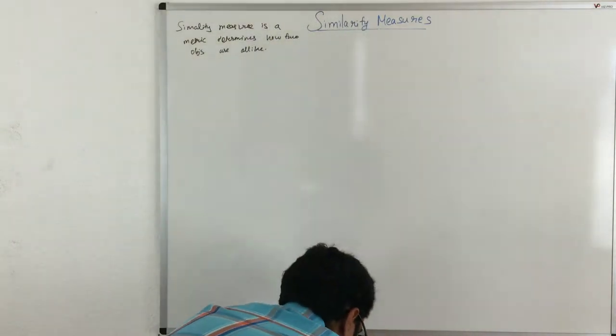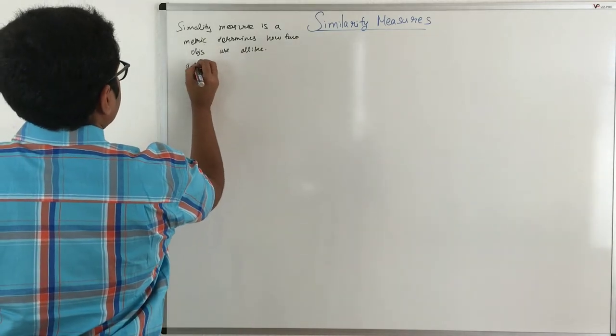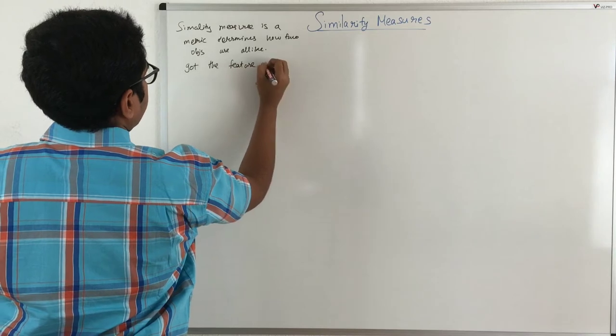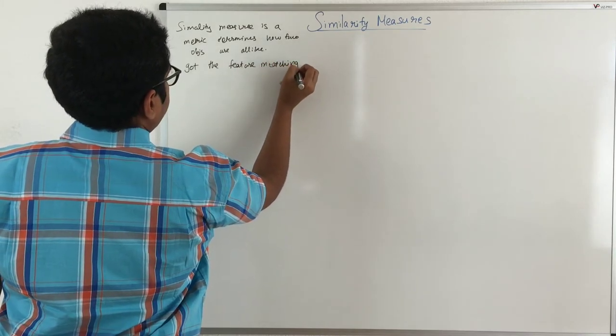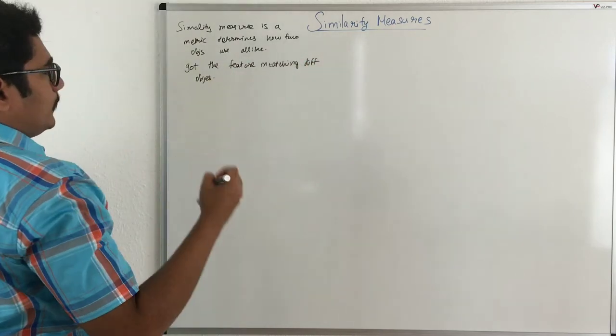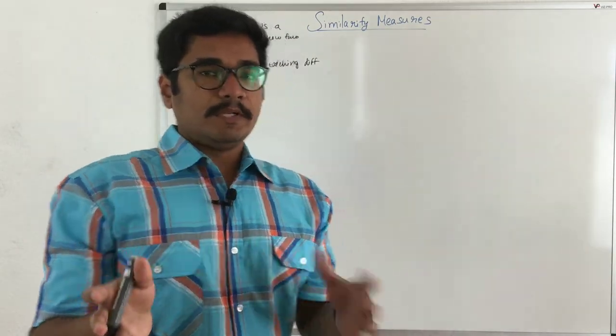So essentially what I have did is I have just got the features or the feature matching between different objects. So based upon various dimensions, we just categorize two different objects. How similar are they?